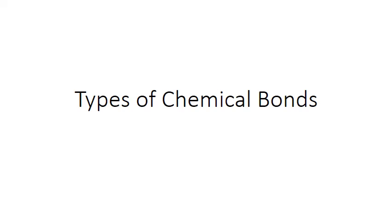In this PowerPoint we'll review the major types of chemical bonds that can form between atoms and the different types of substances that are associated with each bond.